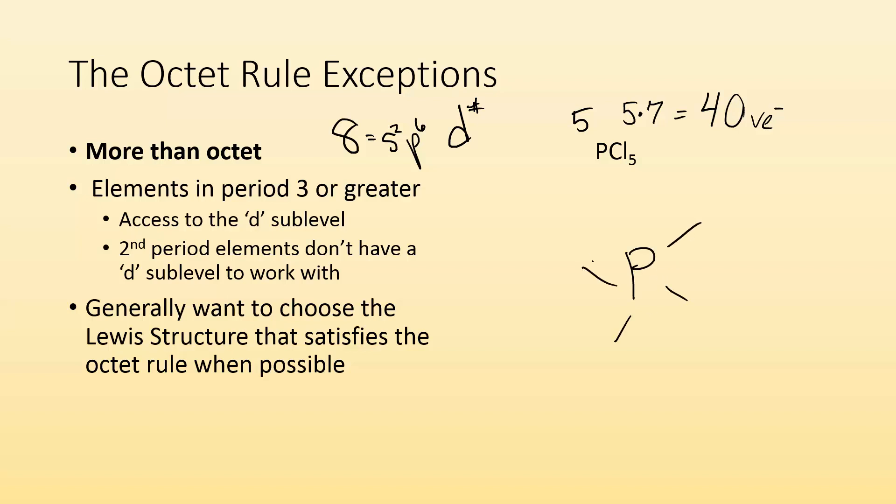And right now, you can already see that this phosphorus has more than eight. This phosphorus has 10 valence electrons. After I finish my octets for all of those chlorines, I'm going to have placed all 40 of my valence electrons. And there's nothing I can do about it. This phosphorus in PCL5 is going to have more than eight. Phosphorus is in period three. So that's the best Lewis structure, even though it has more than eight.